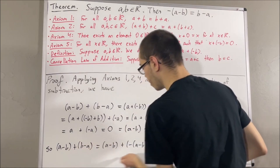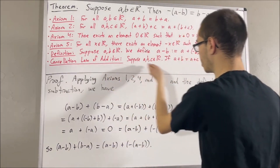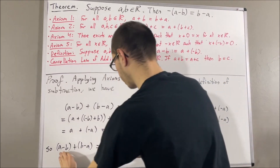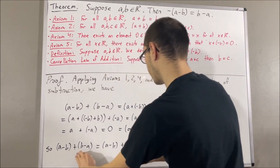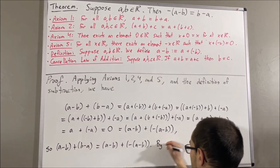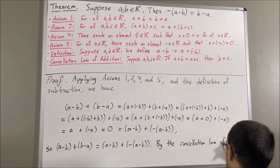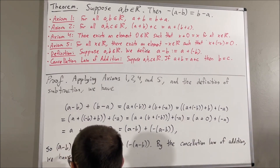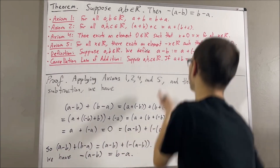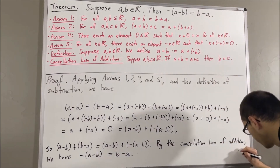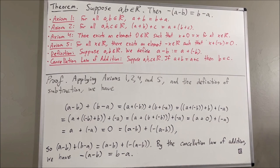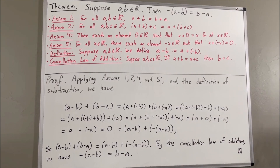And from here, we're in a position to apply the cancellation law of addition. Applying the cancellation law of addition, we can cancel out the a minus b's, so we're left with b minus a equals the negative of a minus b. And that is exactly what we wanted to prove. So this completes the proof.